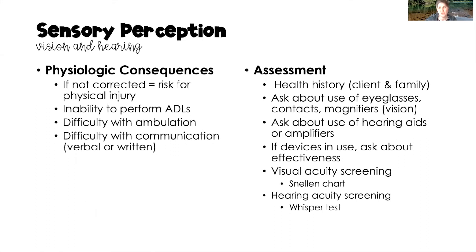The most important physiologic consequence of vision and hearing loss is injury — particularly falls. Clients may also have difficulty performing activities of daily living, difficulty with ambulation due to impaired vision, or difficulty with verbal communication due to hearing loss and written communication due to vision loss. When assessing these clients, take a thorough health history for both the client and family, since vision and hearing loss can have a genetic component. Inquire about the use of eyeglasses, contacts, magnifiers, hearing aids, or amplifiers.